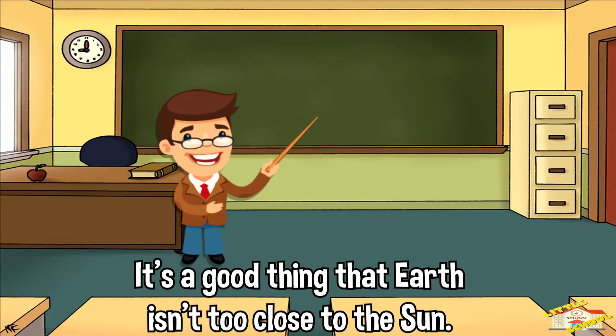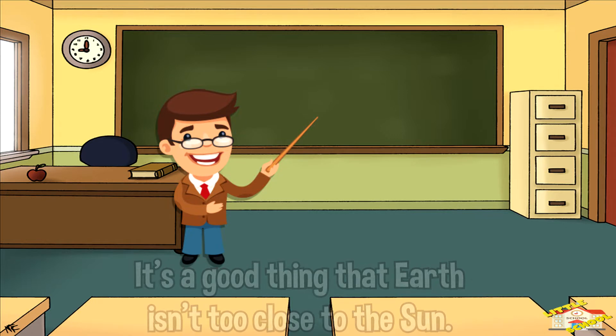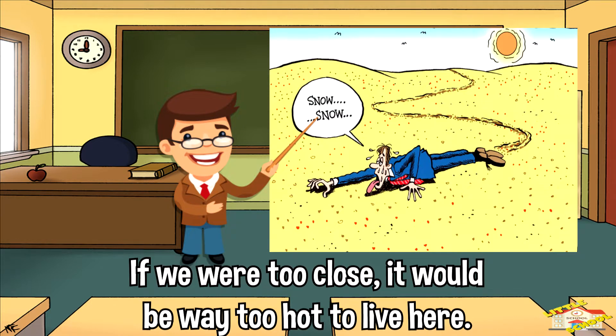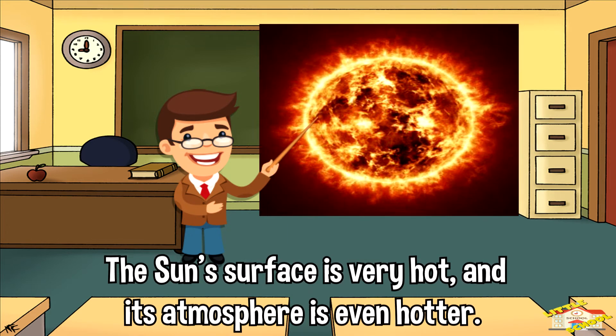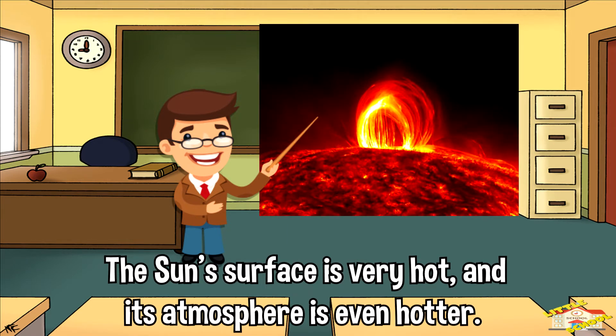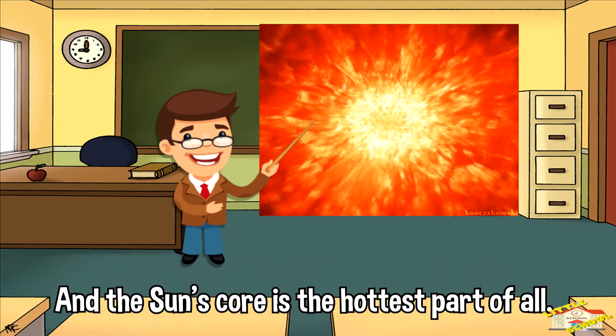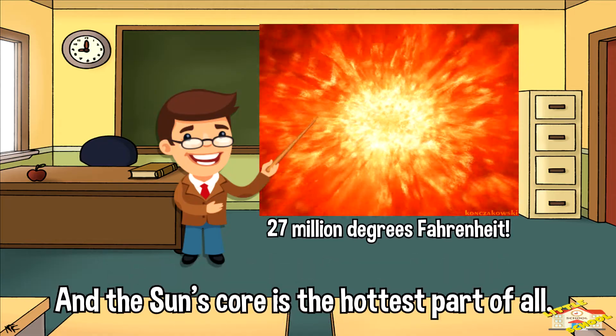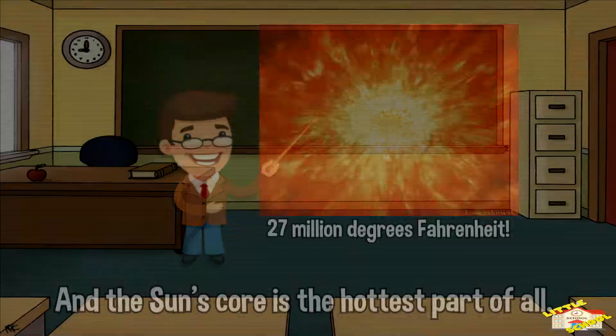However, it's a good thing that Earth isn't too close to the Sun. If we were too close, it would be way too hot to live here. The Sun's surface is very hot and its atmosphere is even hotter. And the Sun's core is the hottest part of all, at a sizzling 27 million degrees Fahrenheit.